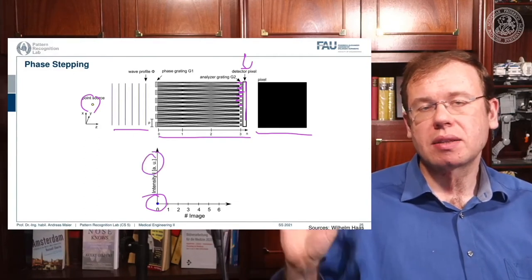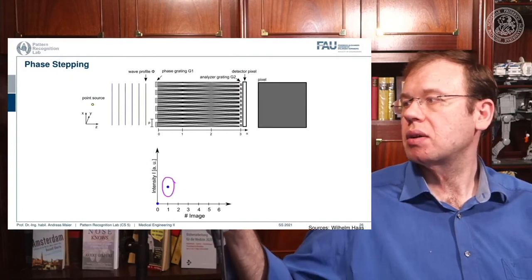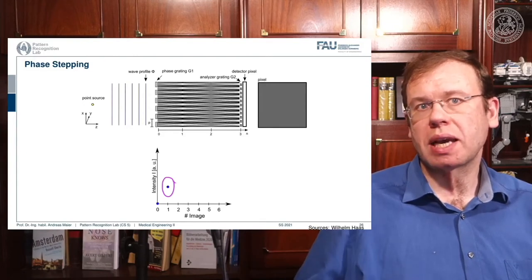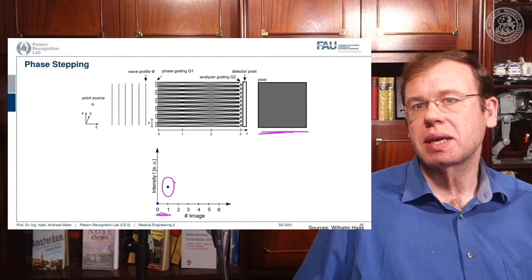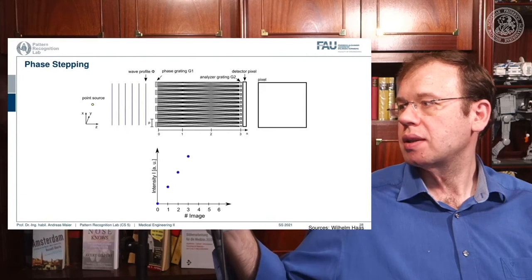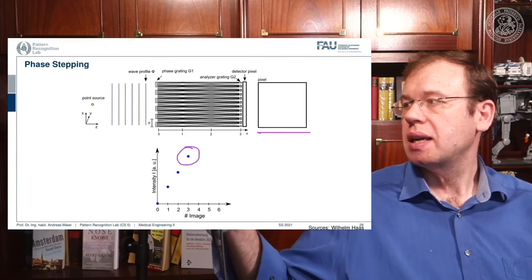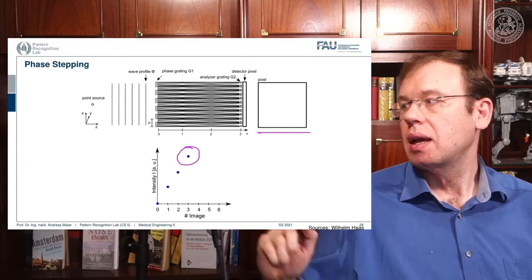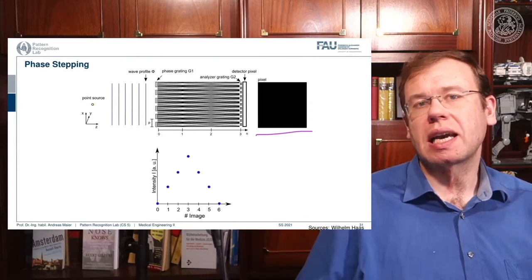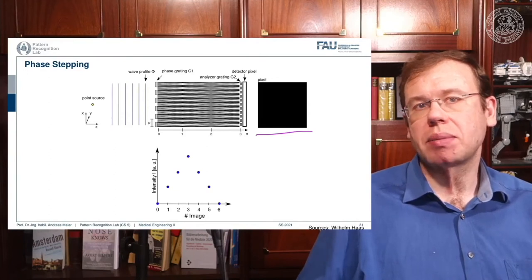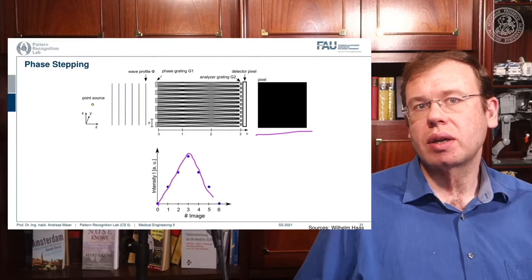As we shift the analyzer grating slightly, we start getting some signal because we gradually move from the white fringe to the black fringe. After another step and another, the pixel gradually becomes white, reaching a maximum. We then step further and the pixel gets dark again as we move with the period over the bright fringes. This is how we construct triangular-shaped signals, which are a surrogate measurement for our wavefront.